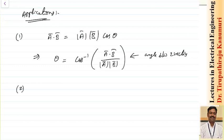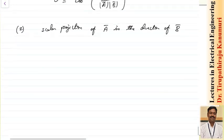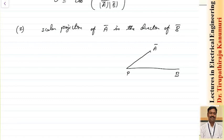The second application is I can find the scalar projection of vector a in the direction of b. Let us assume I take some point as origin p. There is vector b and vector a. The scalar projection will be found by dropping a perpendicular — let us take that intersecting point as q, and this angle as theta. The length pq equals magnitude of vector a multiplied by cos theta.